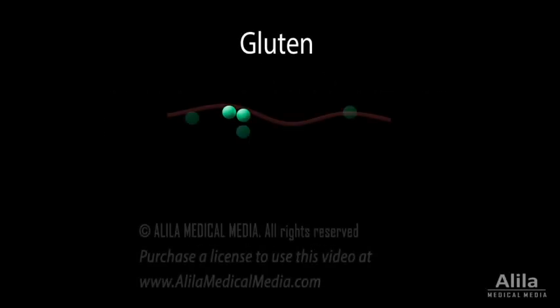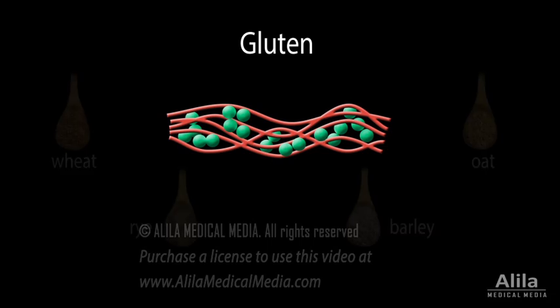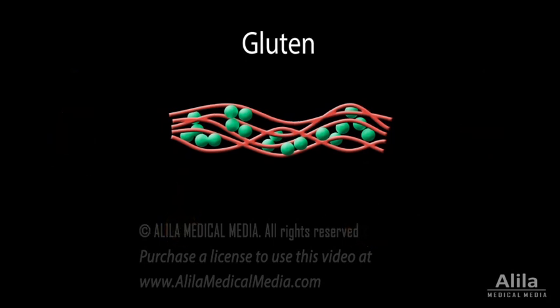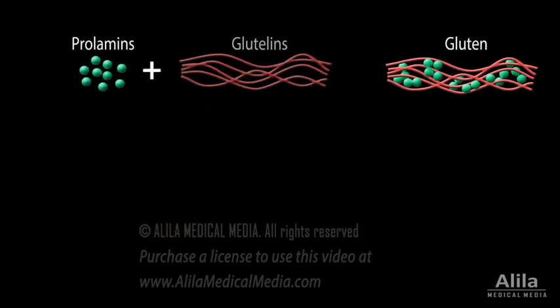Gluten is not a single protein, but a complex mixture of related proteins that constitute the bulk of protein stores in many grains. These proteins belong to two main classes: prolimins and glutilins.